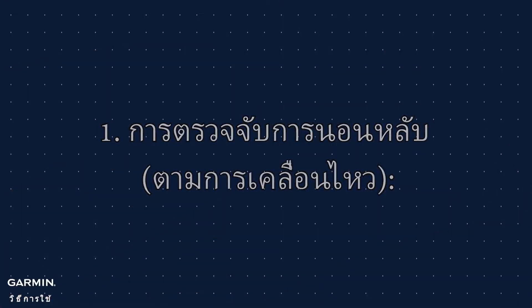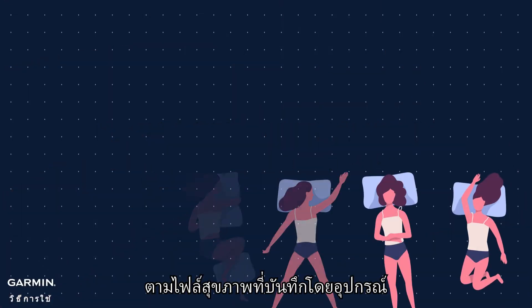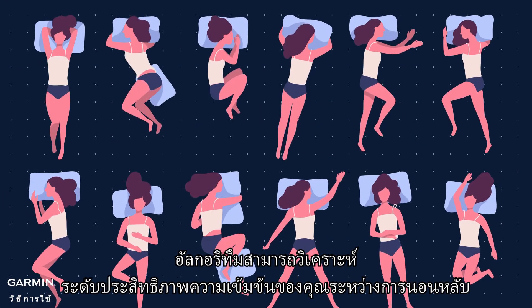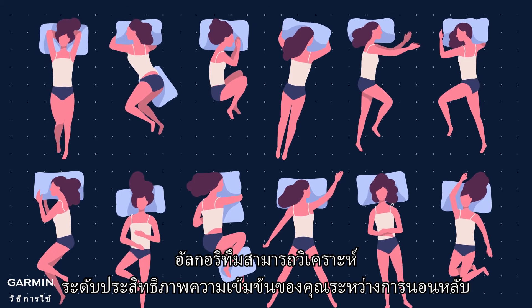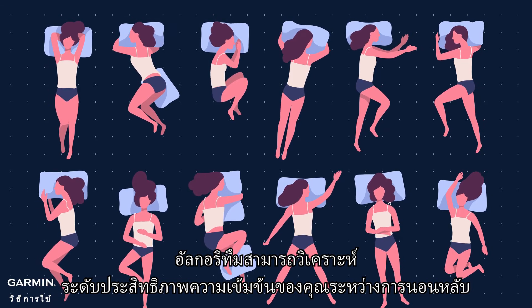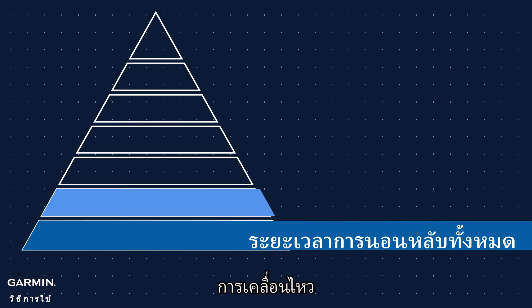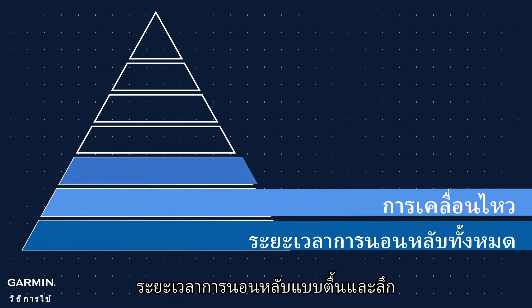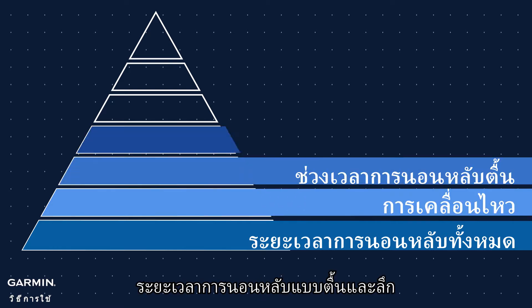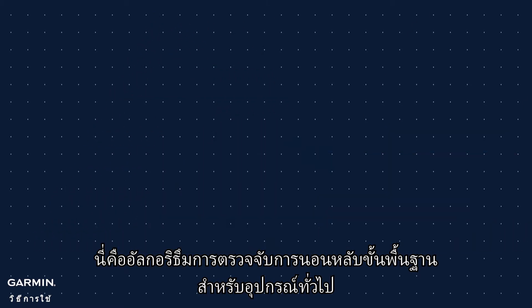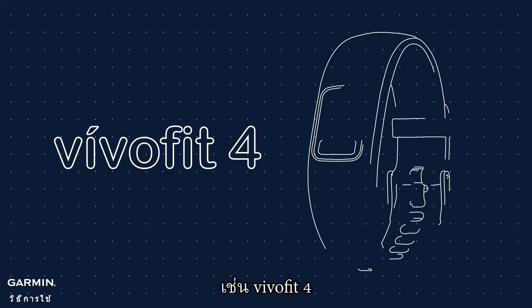1. Sleep detection. According to the wellness files recorded by the device, the algorithm can analyze your active intensity level during sleep and calculate your total sleep duration, movements, and light and deep sleep duration. This is the basic sleep detection algorithm for general devices, like VivoFit 4.